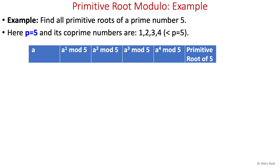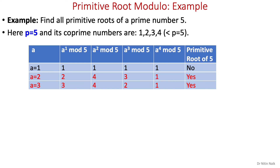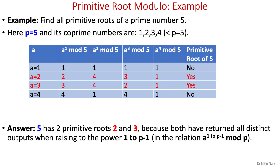Alternatively, we can write the complete process in table format. For each value of a, write the results of a to the power 1 mod 5 through a to the power 4 mod 5. A equals 1: all values same, not a primitive root. A equals 2: all values different, primitive root. A equals 3: all values different, primitive root. A equals 4: values repeating, not a primitive root. So 5 has two primitive roots: 2 and 3.